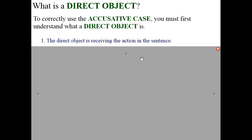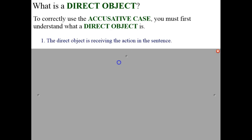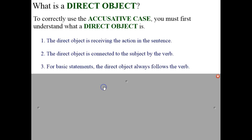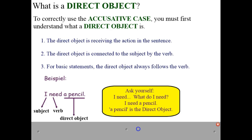Another reminder: what is a direct object? To correctly use the accusative case, you must first understand what a direct object is. The direct object is receiving the action in the sentence. The direct object is connected to the subject by the verb, and for basic statements the direct object always follows the verb. For example: 'I need a pencil' — you can ask yourself 'I need what?' A pencil is the direct object.